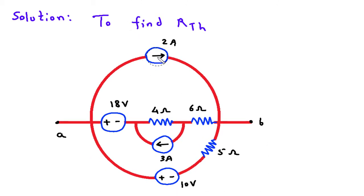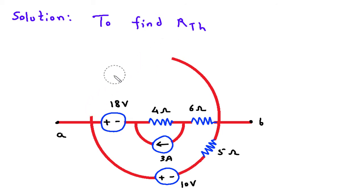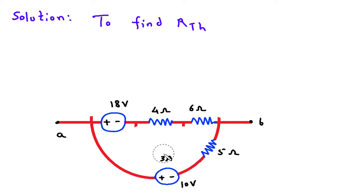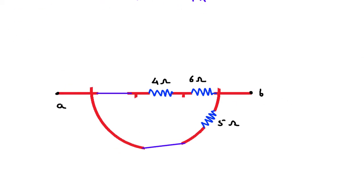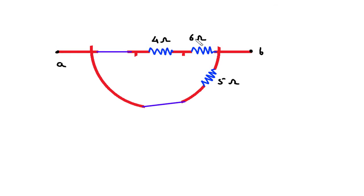This is an independent current source, so this will be open circuited. This is also an independent current source, so this is also open circuited. This is an independent voltage source, so this will be short circuited. Also this is an independent voltage source, so this will be short circuited. Now what remains is 4 Ohm in series with 6 Ohm, so this will be 10 Ohm.